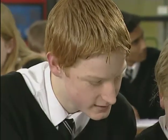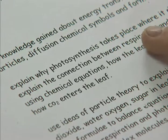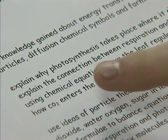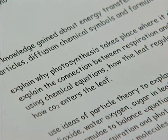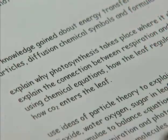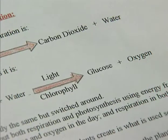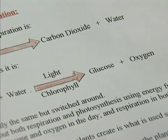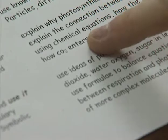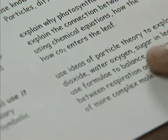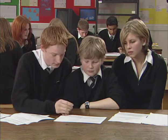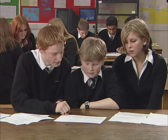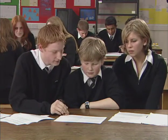You have well explained why photosynthesis takes place and where it does, explaining the connections between respiration and photosynthesis. But here, you've only done the word equations, which only get to grade C. What you need to have done is added chemical equations and balanced equations to explore and show how carbon dioxide is transferred in and out of the leaf.